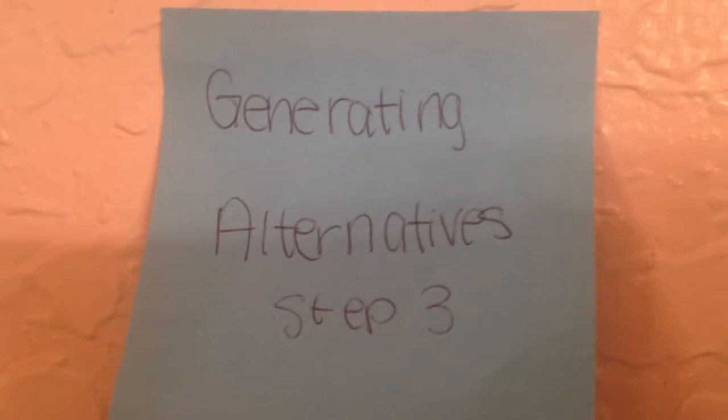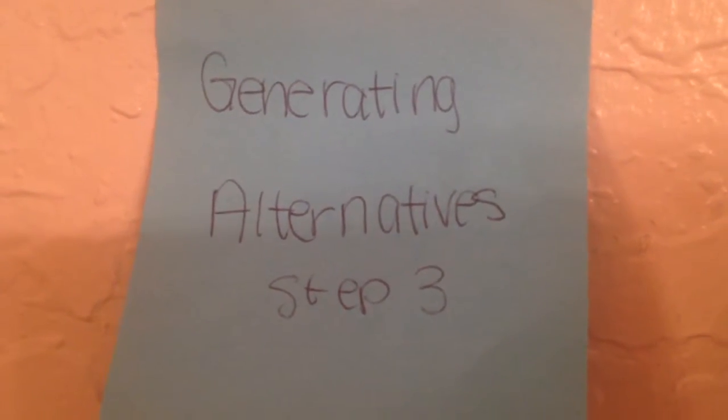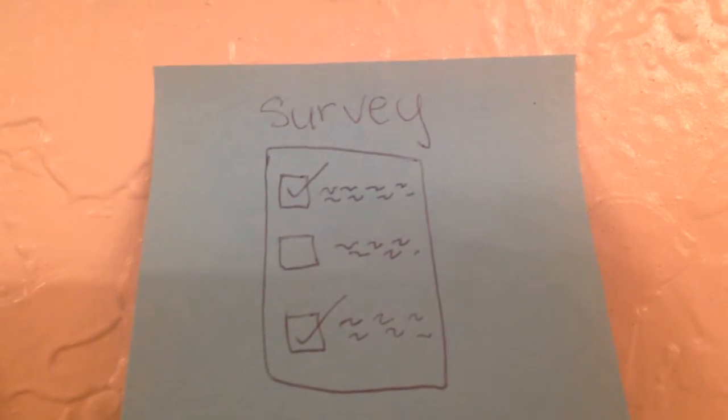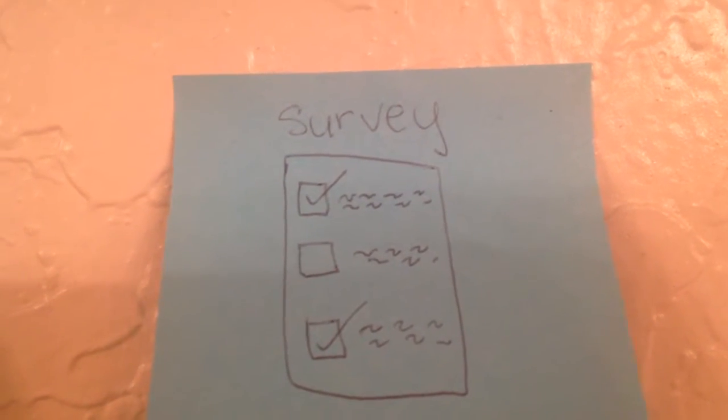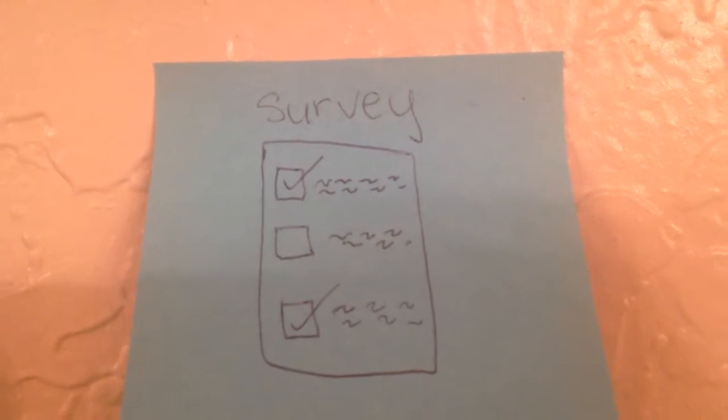Step three: generating alternatives. The team creates a survey for customers to see what they would like to be done in the store.